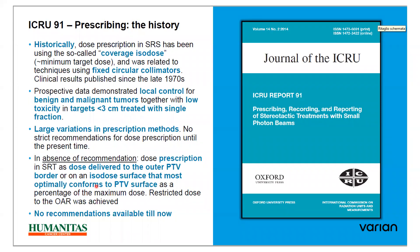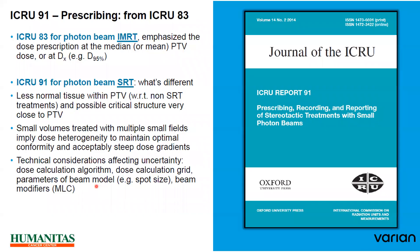So, until now, there is no recommendation. ICRU-83, the previous report on photon beam IMRT, emphasized dose prescription at the median PTV dose. ICRU-91 is for photon beam SRT — what's the difference?